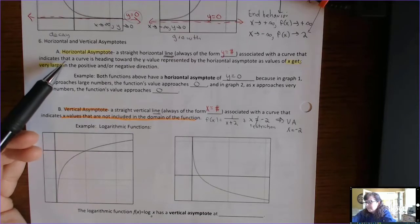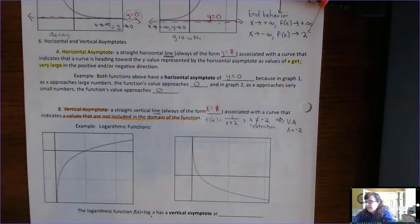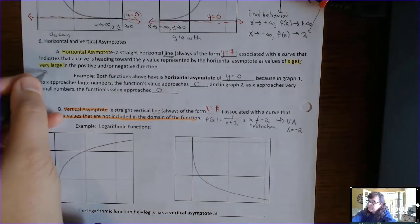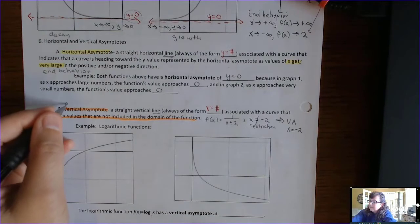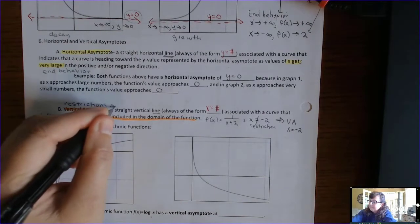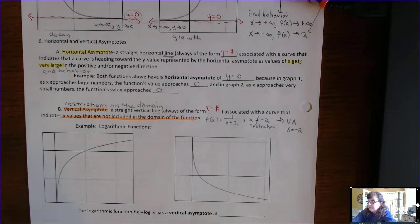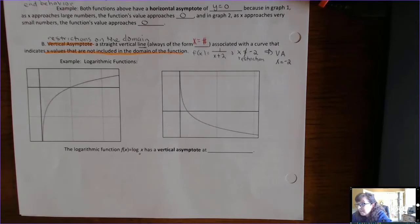Horizontal asymptotes and vertical asymptotes are similar in that they are dashed lines that appear in a function, but the ideas are different. The horizontal asymptote has to do with end behavior, but the vertical asymptote has to do with restrictions on the domain — math talk for 'x can't be certain things.' Domain means the set of x coordinates. We're going to look at logarithmic functions, and all we're examining in this unit is just the graph.